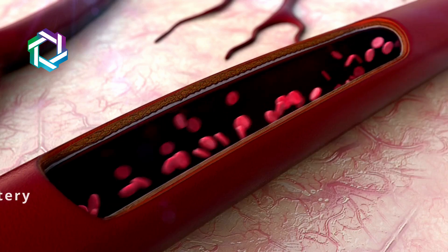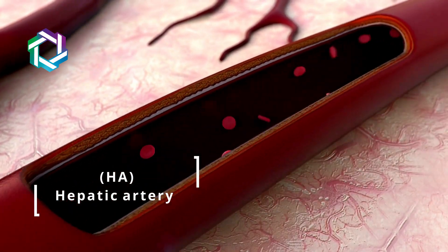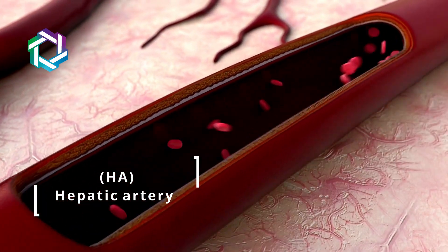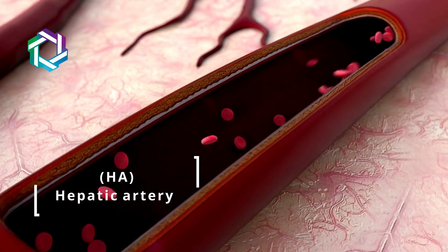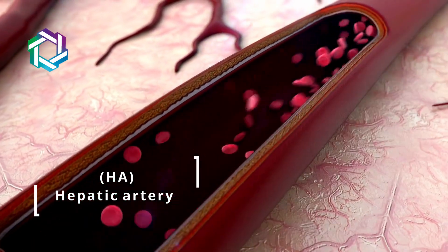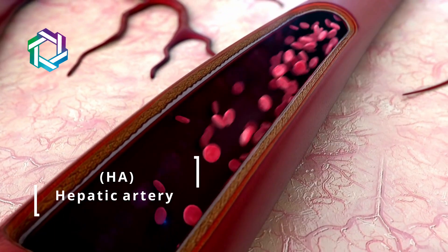Liver is supplied by two major blood vessels. One is the hepatic artery, which is a direct branch of the aorta. The aorta is the blood vessel that comes out directly from the heart and supplies all the parts of the body.